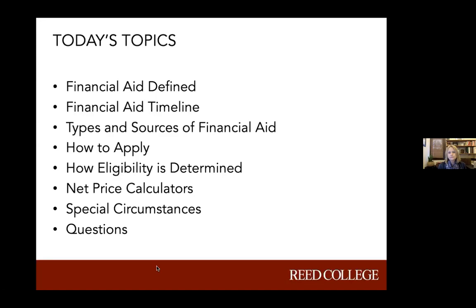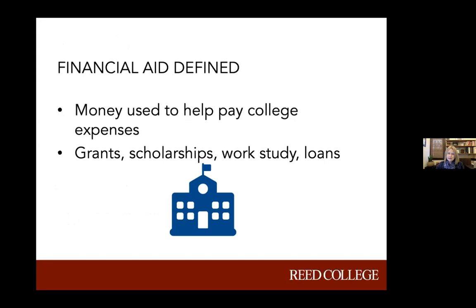Financial aid defined - it really is what it sounds like. It's money used to help pay for your college expenses. That might be aid in the form of a grant or scholarship, student work or work study, or a student loan. We're going to break all of those down in just a minute.